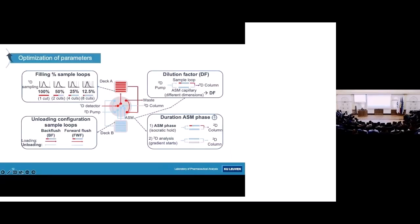These are the four parameters we tried to optimize in this study: the filling percentage of the sample loop, the unloading configuration of the sample loops, the dilution factor, and the duration of the ASM phase.